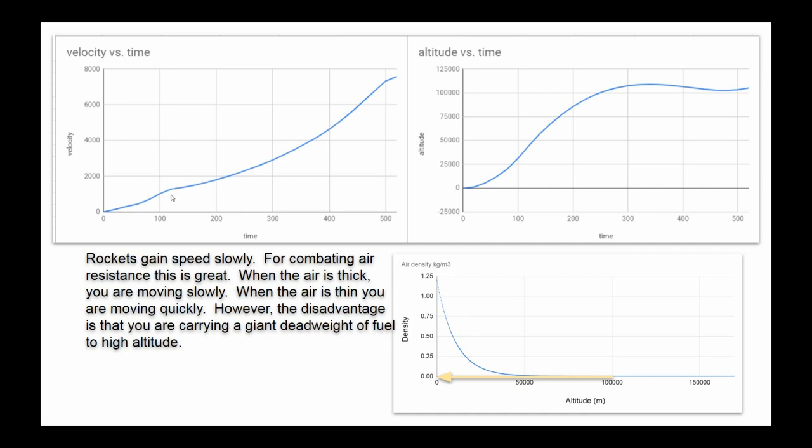Rockets gain speed slowly, which is great for combating air resistance, which is maximum at lower altitudes, but you have to carry the weight of fuel with you. So as the space shuttle increased in speed, it's increasing in altitude. And by the time it reaches a hundred thousand meters, we're at what's called the Karman line, effectively the point where there's no more wind resistance.